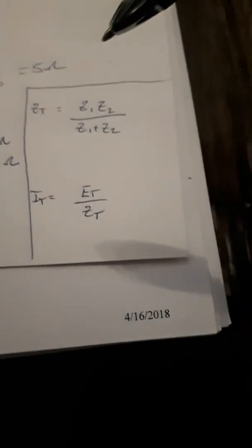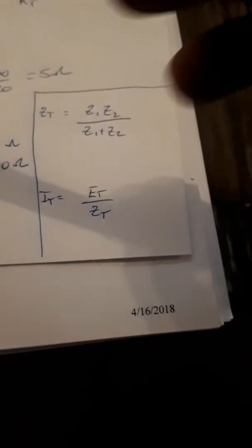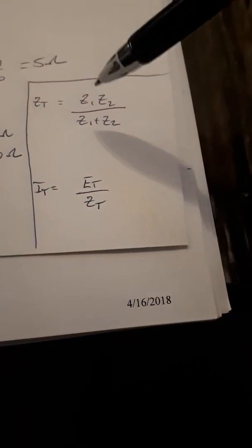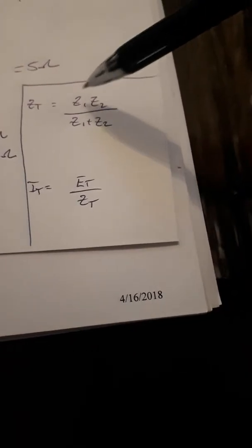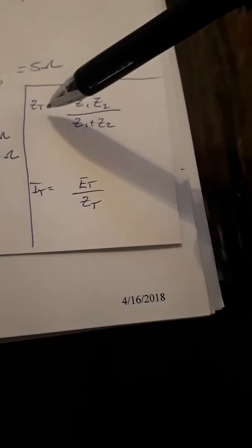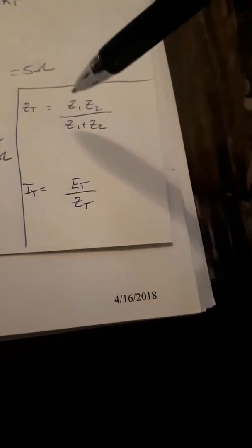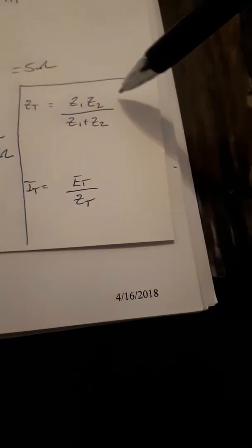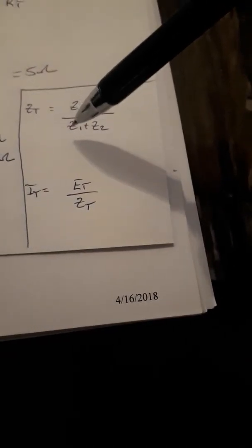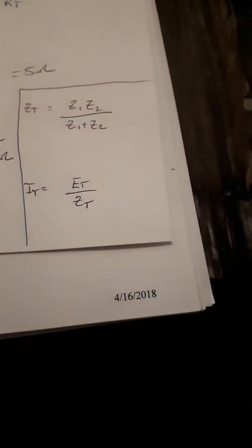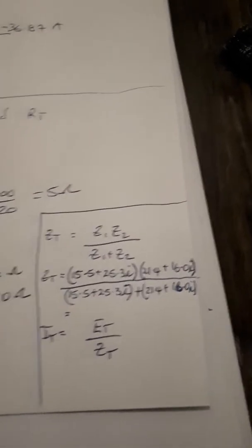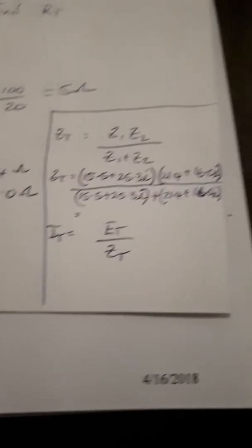So ZT, the total impedance of the circuit, is equal to Z1 times Z2 over Z1 plus Z2. So when these values over here are written in the formula like that, we can go ahead and just plug these values into the calculator.